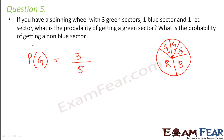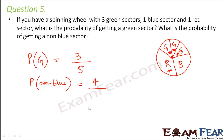Now what is the probability of getting a non-blue sector? The non-blue sectors are three green and one red — four sectors total out of five. So the probability of getting a non-blue sector is four by five.